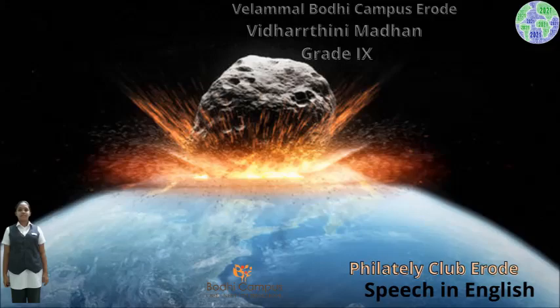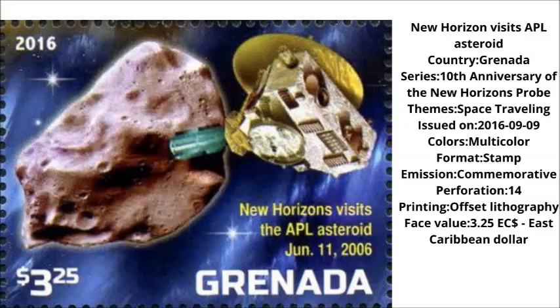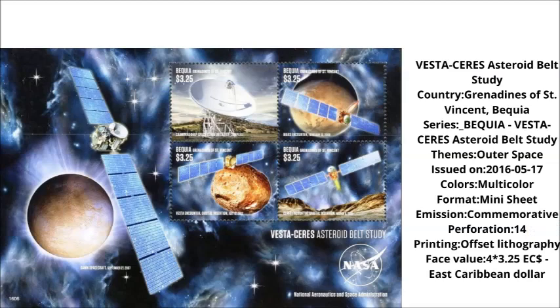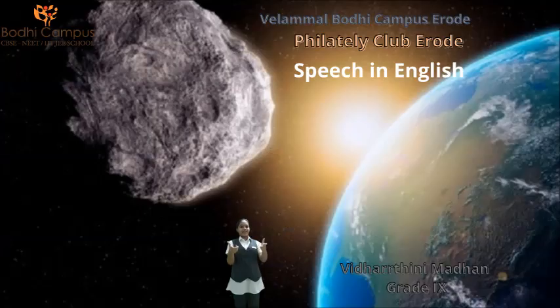The United Nations has proclaimed it to be observed globally on June 30 every year in its resolution. Asteroid Day aims to raise awareness about asteroids and what can be done to protect the Earth, its communities, and future generations from a catastrophic event.